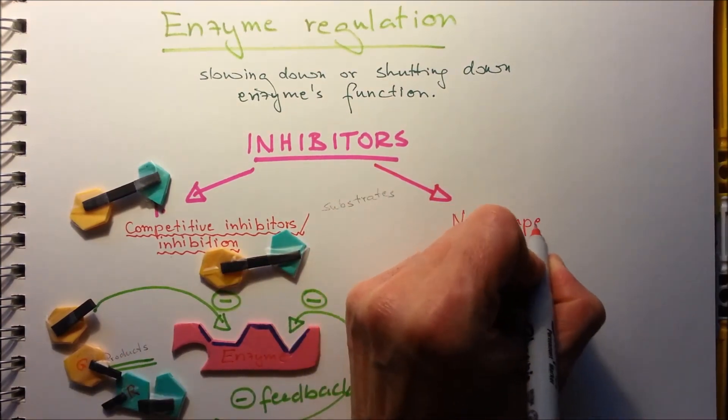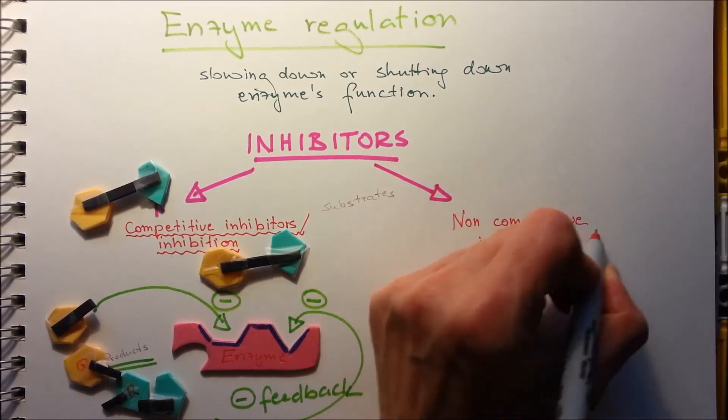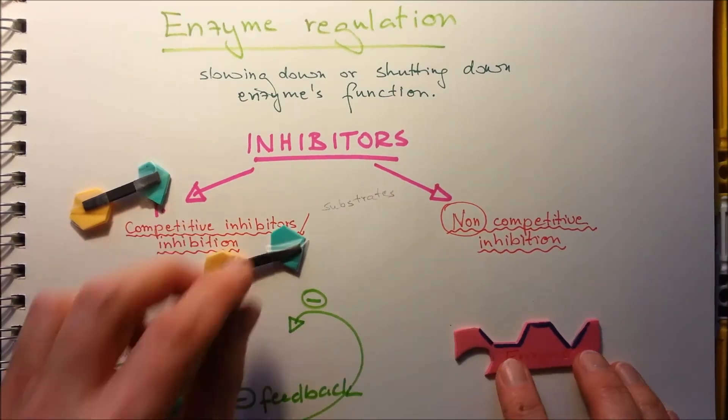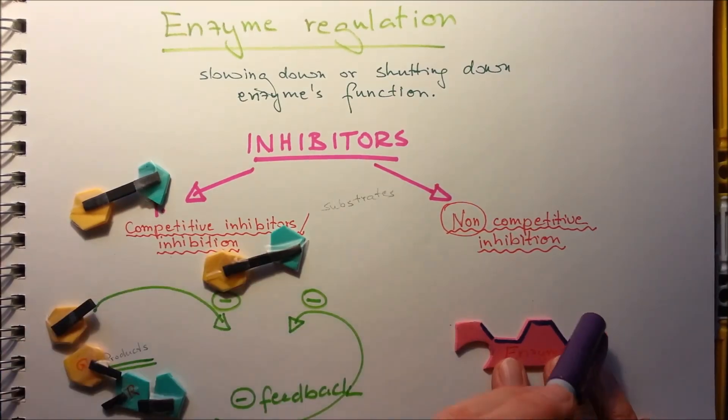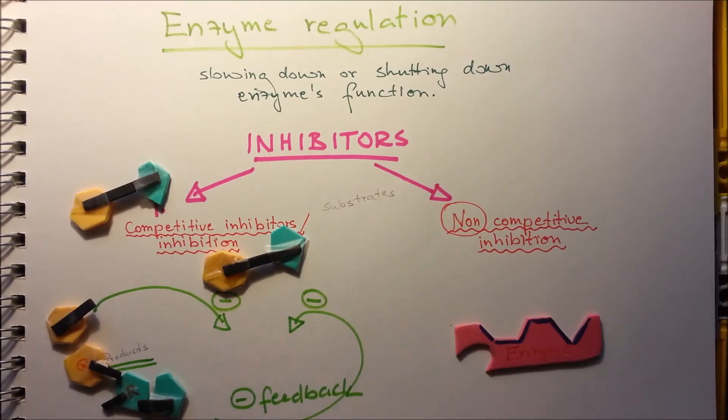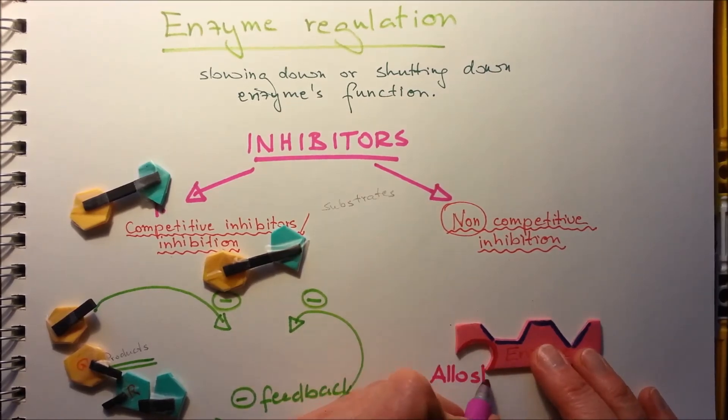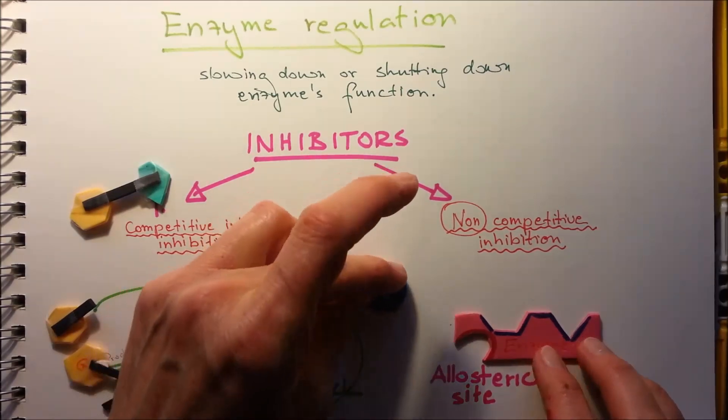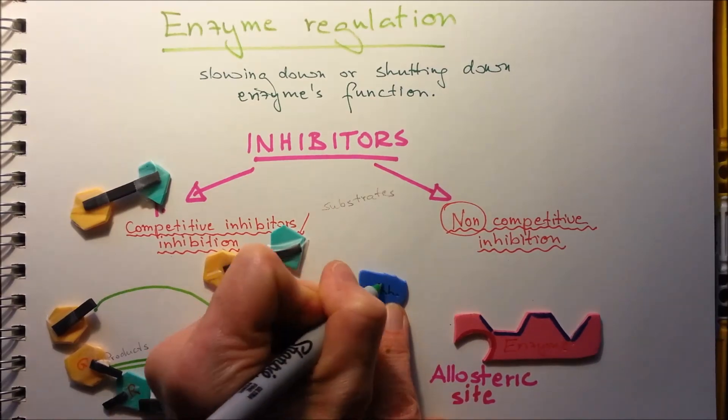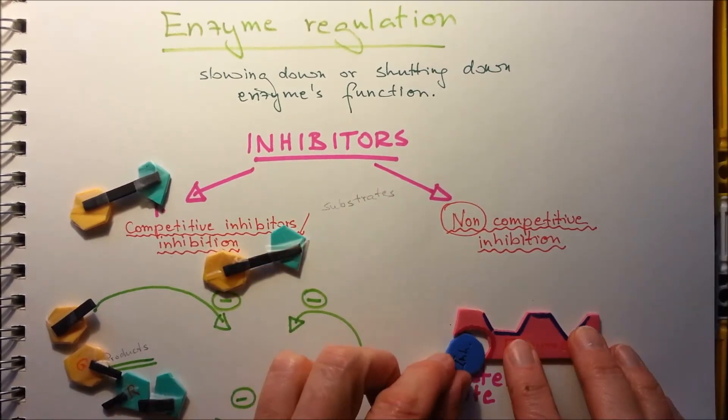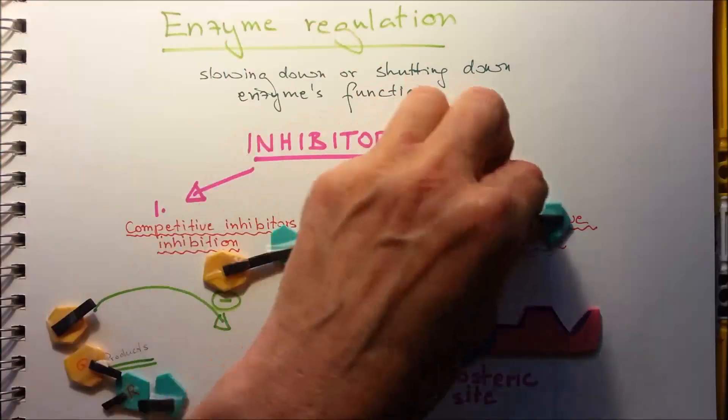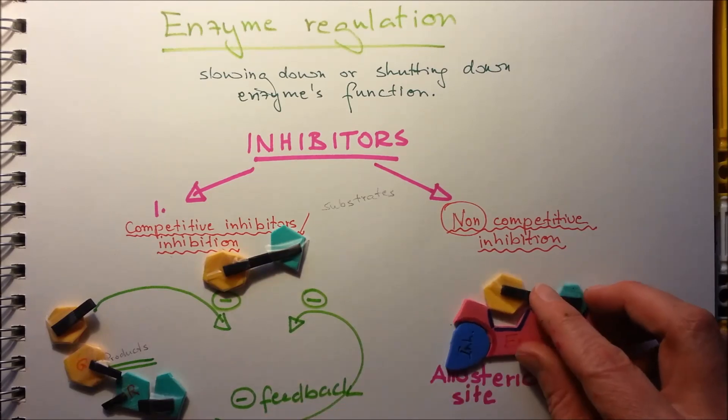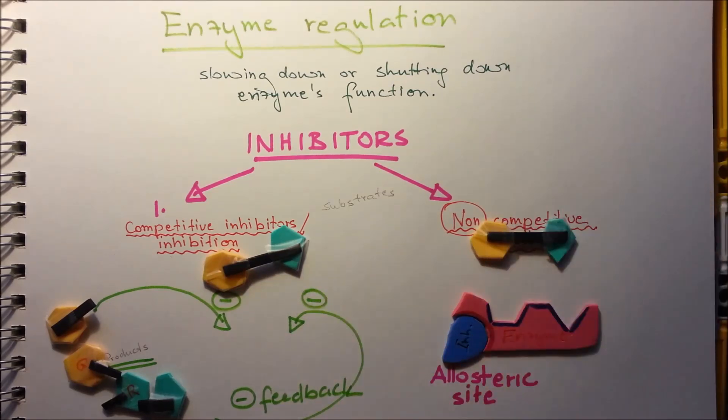The other one is non-competitive inhibitors. It's non-competitive, so they don't fight for the active site. On the other hand, we have an allosteric site. The allosteric site is a site on the enzyme where a molecule can combine with the allosteric site, and it will change the shape of the active site, so the substrate cannot fit into the active site, so no reaction will take place.